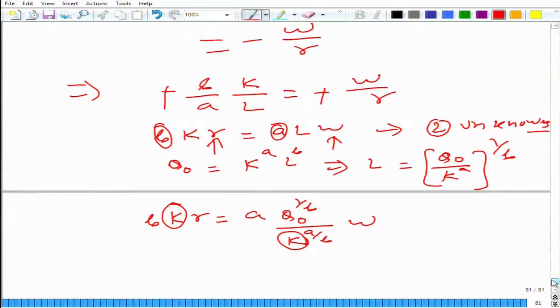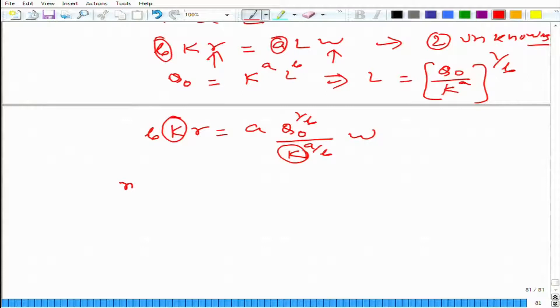We have used mathematical and a little bit of graphical understanding of the problem. Another pure mathematical way is just to look at the problem again. Minimize r times k plus w times l with respect to k and l, such that k to the power a times l to the power b equals q naught. We can get rid of one of these two variables.